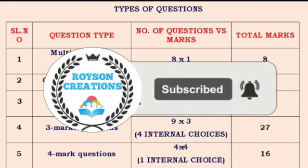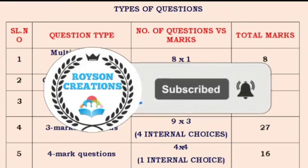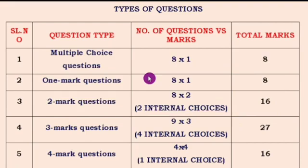The first type is multiple choice questions. There will be 8 questions, each carrying 1 mark. These will come from biology, chemistry, and physics — it is not restricted to only one subject. From all 3 parts they will give multiple choice. Together that is 8 questions for 8 marks.